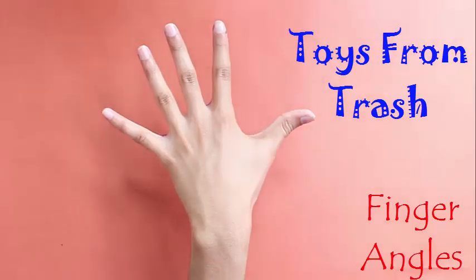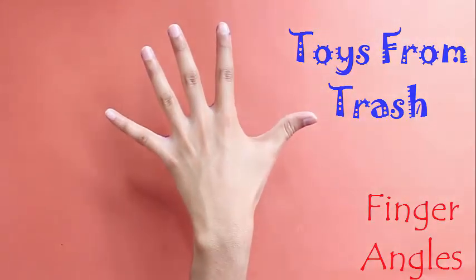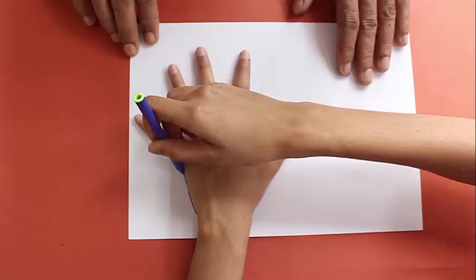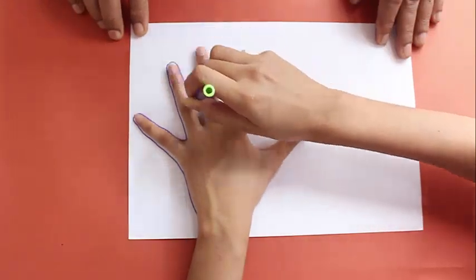Have you wondered what's the angle between your thumb and the small little finger? If you put it on a scale it looks like it might be 180 degrees.